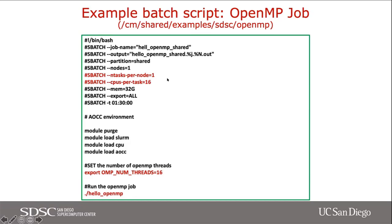For an OpenMP job, use partition equals shared, nodes equals one, tasks-per-node equals one, and CPUs-per-task equals 16. This is different from Comet — on Comet you could set ntasks-per-node to 16 and launch an OpenMP job, but on Expanse you'd likely end up bound to one core if you do that. Explicitly ask for what you need: one primary task that will spawn 16 threads means ntasks-per-node equals one and CPUs-per-task equals 16. Then set OMP_NUM_THREADS to 16, matching the CPUs-per-task, and run the code.